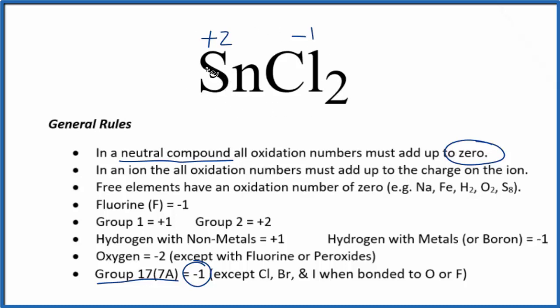We can check our work here and see that 2 times minus 1, that's minus 2. So minus 2 and plus 2 gives us zero. These are the oxidation numbers for each element here in SnCl2, tin chloride.